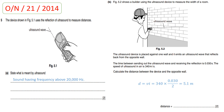The time between sending out the ultrasound and receiving the reflection is 0.030 seconds. The speed of ultrasound in air is 340 meters per second. To calculate the distance between the device and the opposite wall, use distance equals speed multiplied by time. The time must be halved — divided by 2 — because the given time is for the round trip. So: distance = 340 × (0.030 ÷ 2) = 5.1 meters.